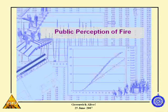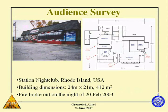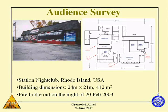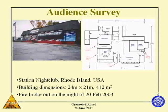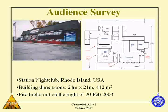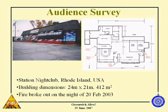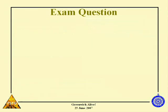Now, before we start, I want to try and get some idea of your perception of fire. I want to run through a very simple live survey with the audience here. This is the Station Nightclub in Rhode Island, United States. There was a devastating fire in this building on the 20th of February 2003, and we're going to talk about this fire throughout this presentation. The building was quite large — 24 metres by 21 metres, about 412 square metres. The fire actually started on the stage here. I don't want the fire engineers in the audience to answer this question — I want everyone else to answer. So fire engineers, I assume you know the answers, so please don't put your hands up. You're going to have to earn your supper here.